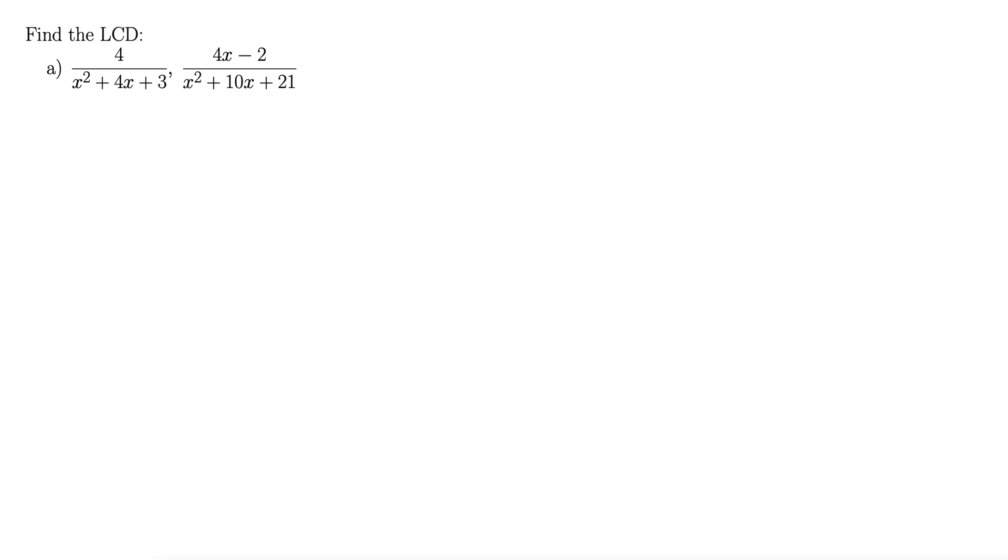In this example, we want to find the least common denominator. We have 4 divided by x squared plus 4x plus 3, and 4x minus 2 divided by x squared plus 10x plus 21.